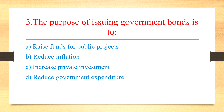Question 3: The purpose of issuing government bonds. The options are: raise funds for public projects, reduce inflation, increase private investment, or reduce government expenditures. The answer is to raise funds for public projects, as the government issues bonds to finance long-term public infrastructure projects.